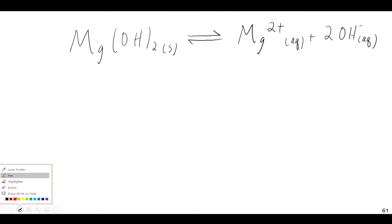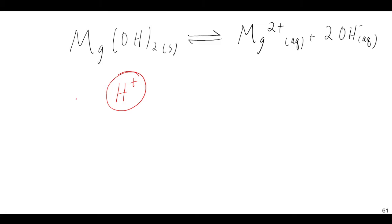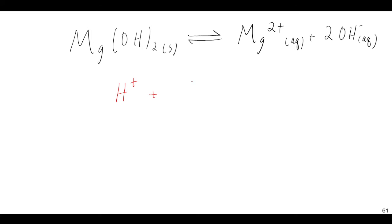So if we remove OH⁻, we can shift the reaction to the right and get more of this magnesium hydroxide to dissolve. How can we do this? Well, one of the ways you remove OH⁻ is by adding an acid. A strong acid like HCl doesn't really exist as HCl in the aqueous phase — it's basically all H⁺ and Cl⁻. So if you're adding one molar HCl, it's really one molar H⁺. If you add an acid to this solution where you have the hydroxide in it, this is an acid-base neutralization, and you'll create some liquid water.